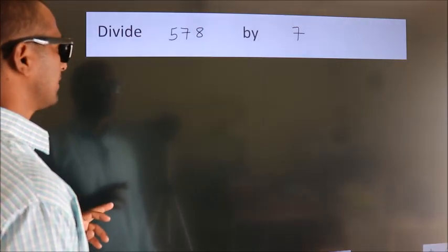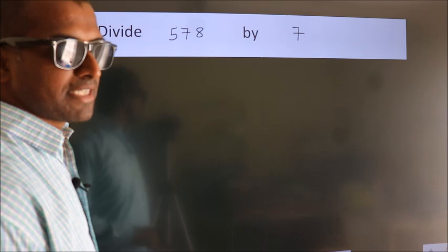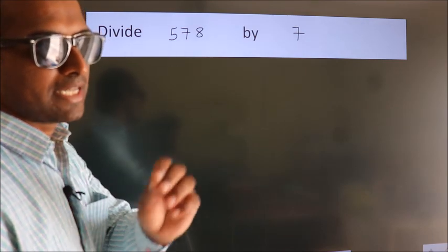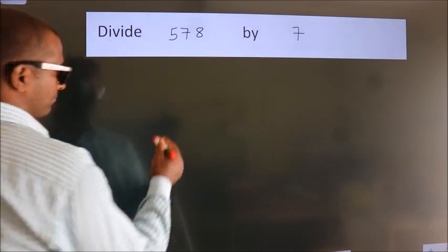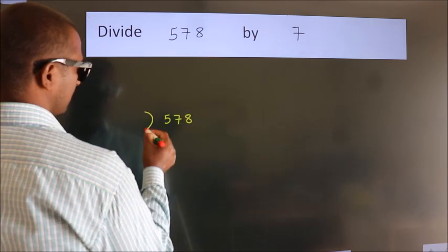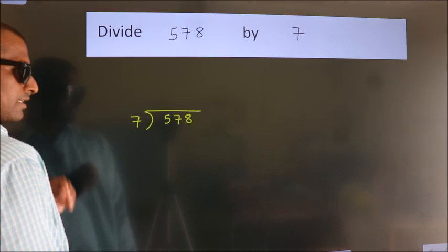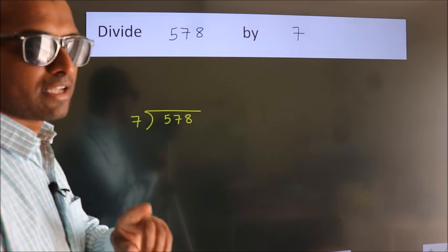Divide 578 by 7. To do this division, we should frame it in this way. 578 here, 7 here. This is your step 1.